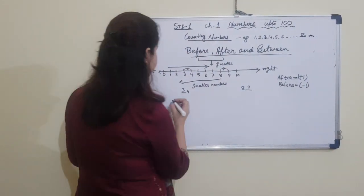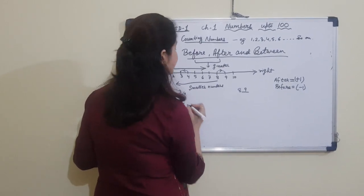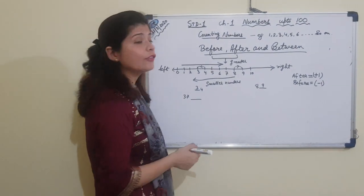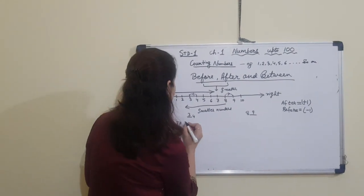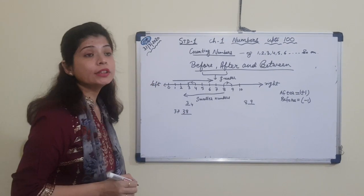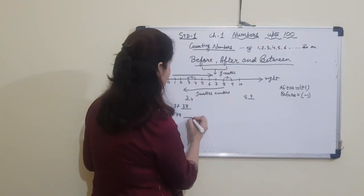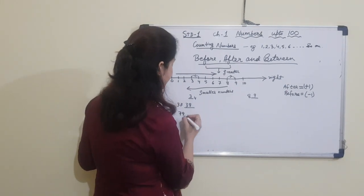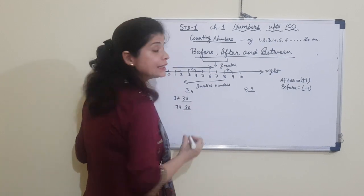Taking a bigger example: suppose the number is 37. What is the number after 37? For after, we do 37 plus 1: 7 plus 1 is 8, and 3 stays, so it is 38. Now after 79: 79 plus 1 — 9 plus 1 is 0 with 1 carried over to 7, giving us 80.